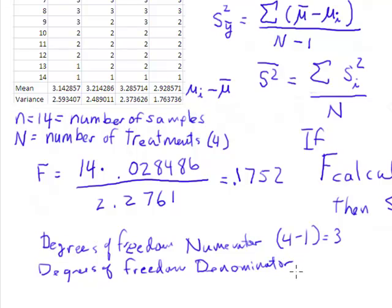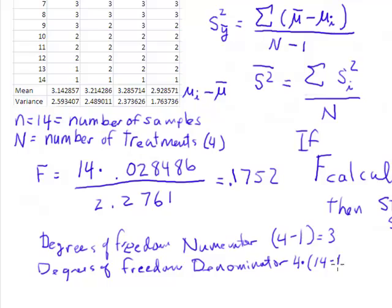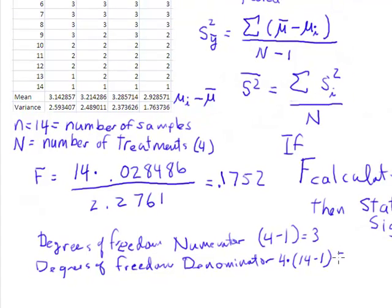The degrees of freedom for the denominator, though, is the degrees of freedom within treatments. And so we have 4 different treatments times 14 samples, but we have to take off 1. We lose 1 degree of freedom, and so that's 4 times 13, which turns out to be 52. So the degrees of freedom for the denominator is 52.